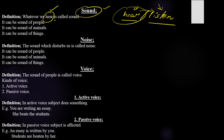Whatever we hear is called sound. Sound can be the sound of people — a lot of people talking where you cannot clearly understand what they are saying. It can also be the sound of animals. For example, a dog barks at night and you don't understand what it means. Dogs have their own boundaries and they fight when another dog enters, and when they yell you don't get what they mean.